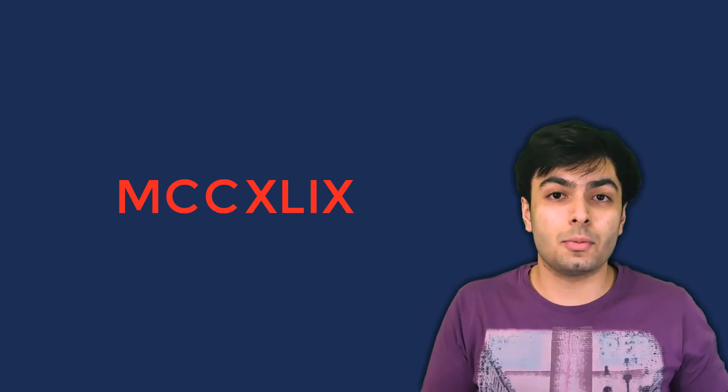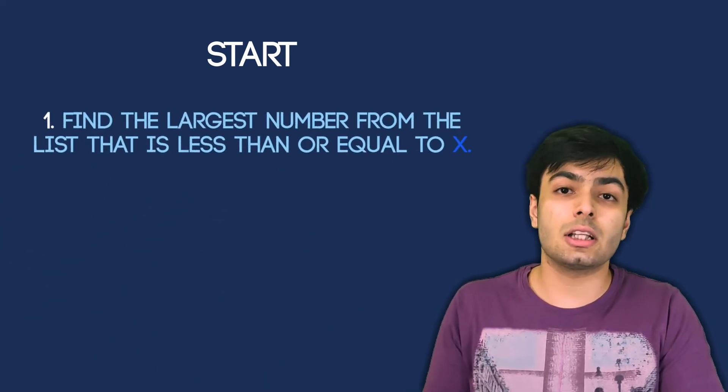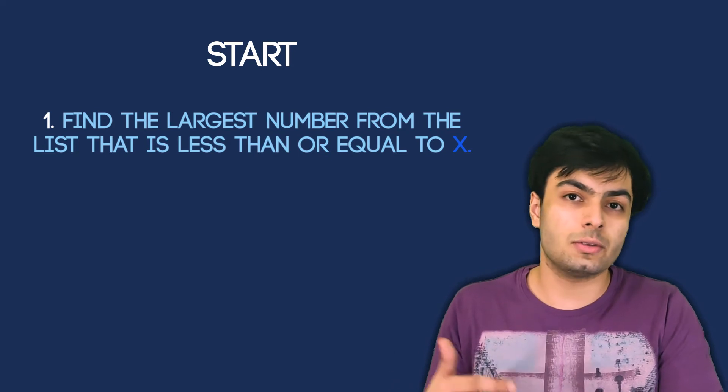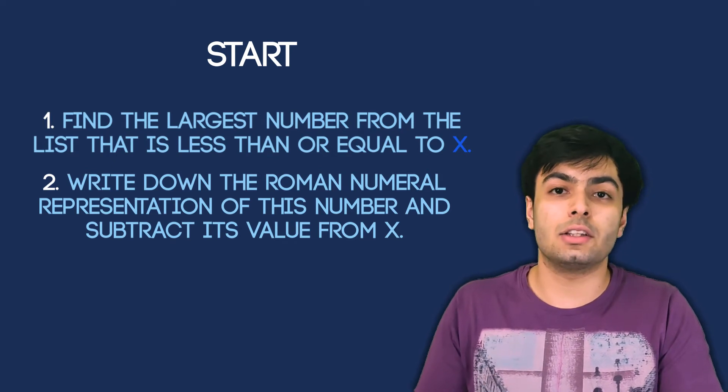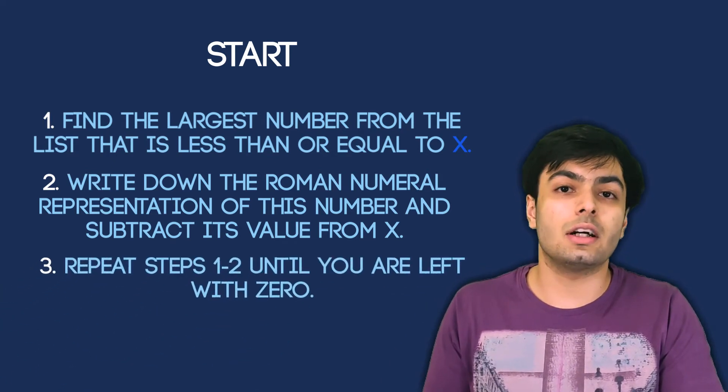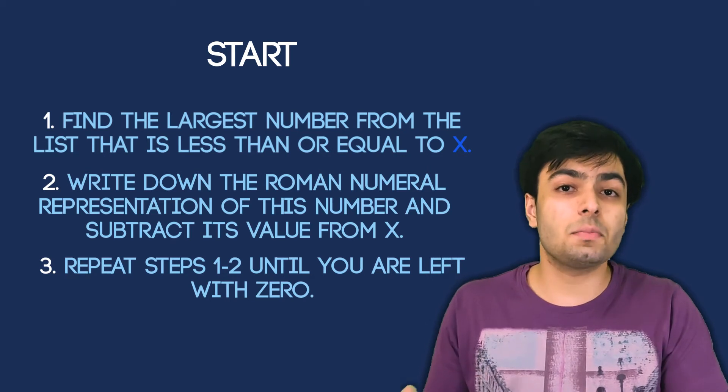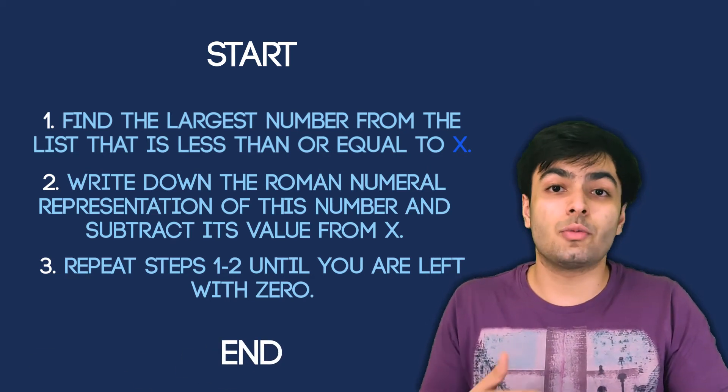The letters we have written down form our Roman numeral. We can generalize this process as follows. Let's call the number we are trying to convert X. The first step is to find the largest number from our list that is less than or equal to X. Next, we write down the Roman numeral equivalent of this number and subtract its value from X. We repeat steps 1 and 2 until we are left with 0, at which point the conversion is complete and all the letters we wrote form our Roman numeral. Now that we know about Roman numerals and have seen a conversion method, we can start coding.